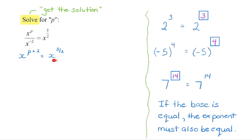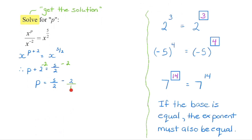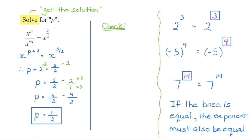We can use that concept here. Since the base x is equal on both sides, the exponents must also be equal. Therefore, p plus 2 equals five-halves. This is now a single linear equation. To isolate the variable, we subtract 2 from both sides — what you do to one side you do to the other. We now have two fractions to subtract. The lowest common denominator is 2, so we rewrite 2 as four-halves. Then 5 minus 4 is 1, keeping the denominator the same, giving p equals one-half.